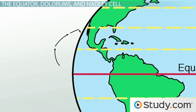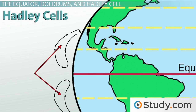The warm air rising from the equator eventually begins to spread horizontally, which creates those wide, windy circulation cells. On either side of the doldrums are the Hadley cells. You can remember the Hadley cell borders the equator because the equator is hot, and hot and Hadley both begin with H.